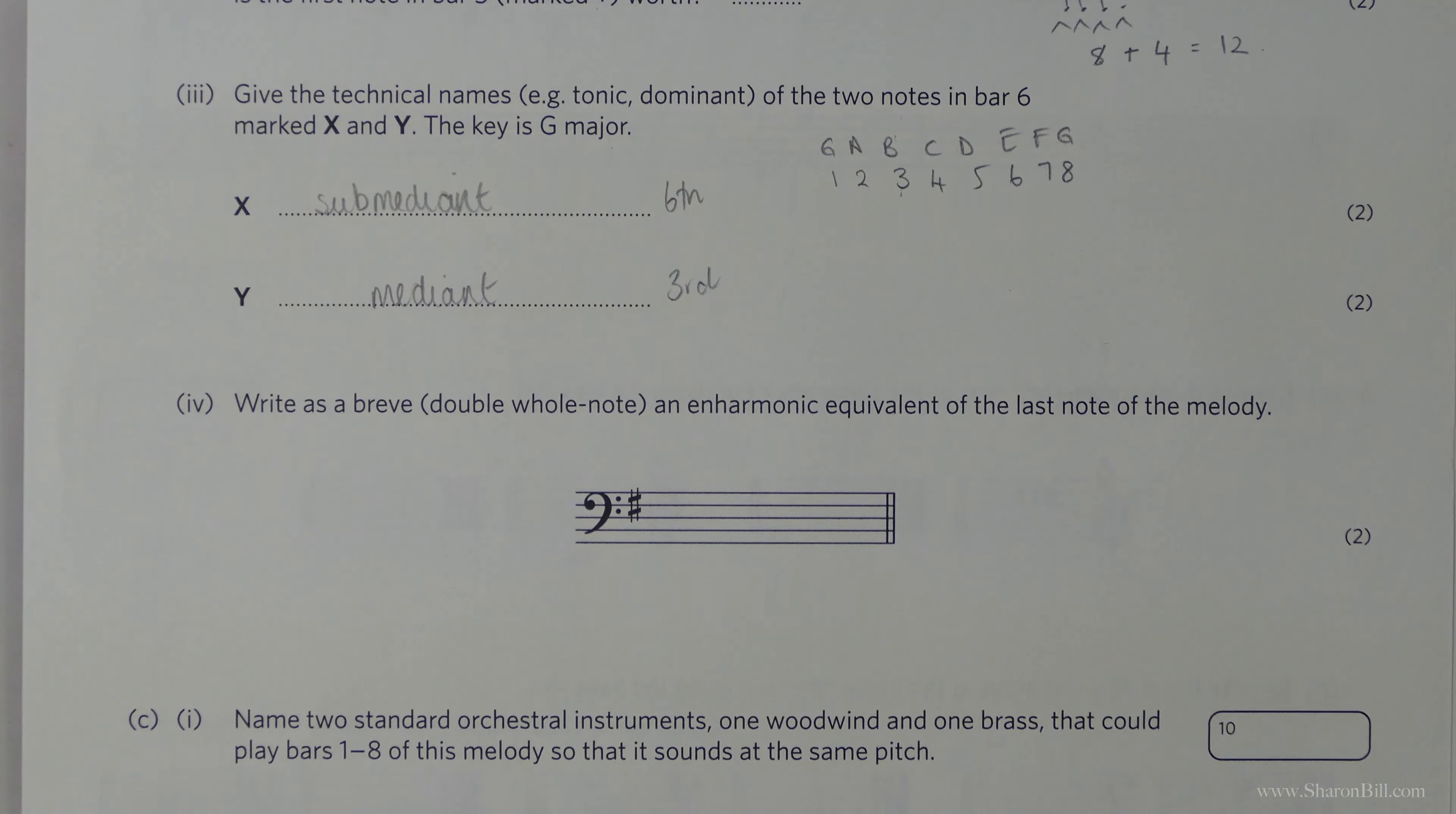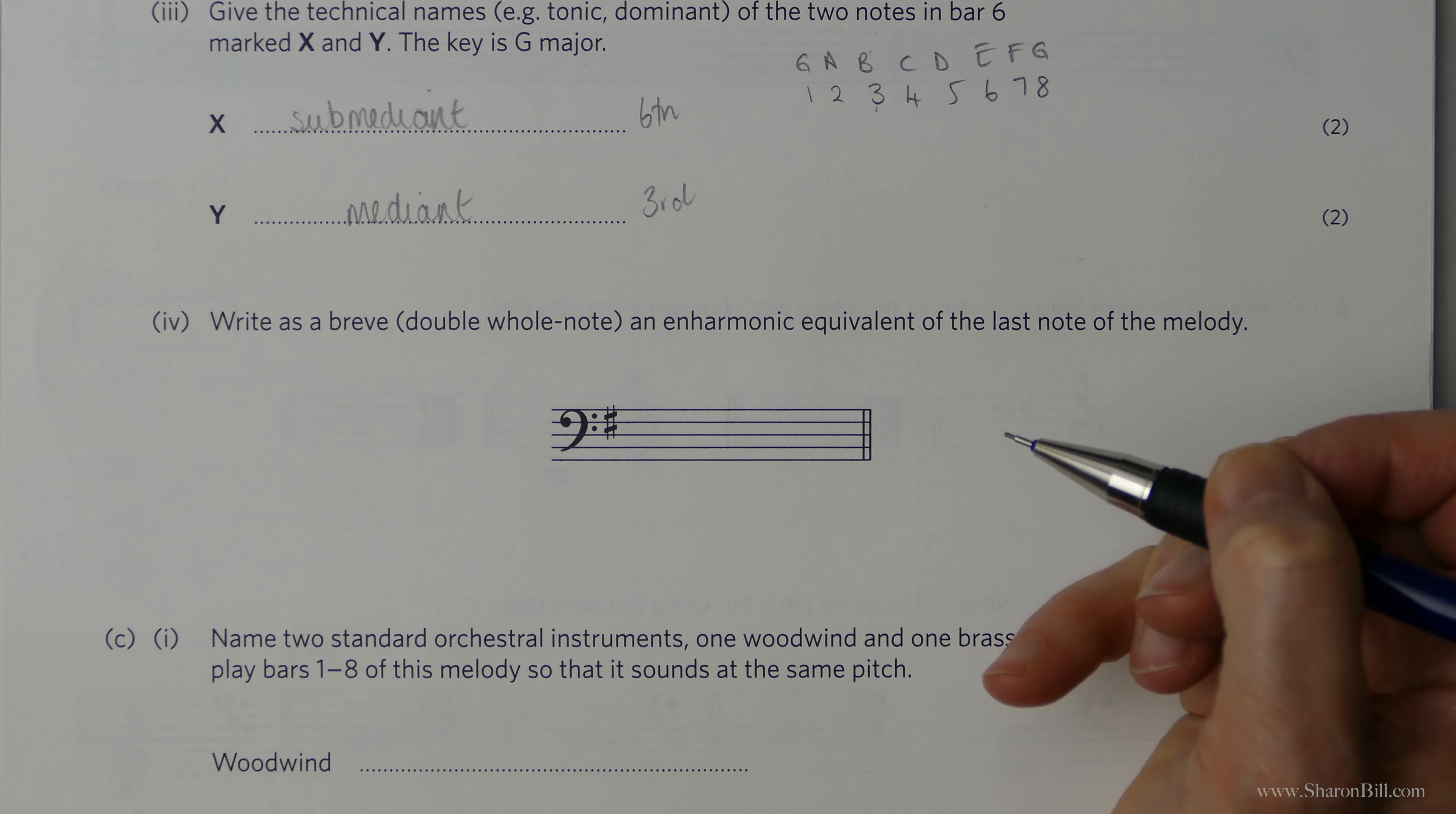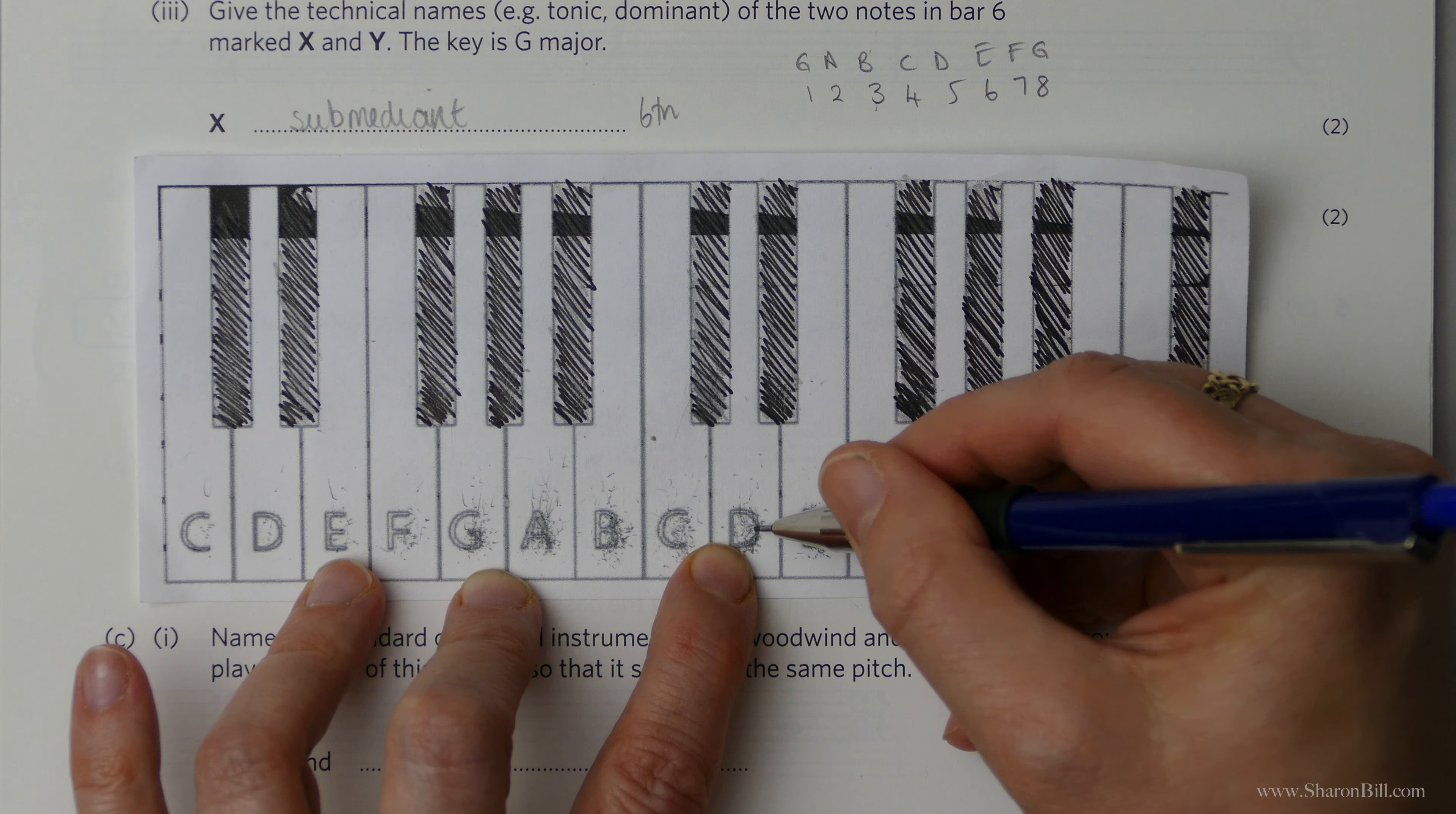However, we shall press on. So now we're asked to write as a breve or a double whole note, an enharmonic equivalent of the last note of the melody. So the enharmonic equivalent is a note that sounds the same, but is written in a different position and given a different note name. So the last note of the melody is a D, the D above middle C. Make sure you get the right octave. And so let's look at that. So the D, it could be C double sharp, or alternatively going higher to the E above that, and that's a double flat. So either one of those will do.